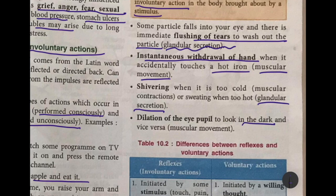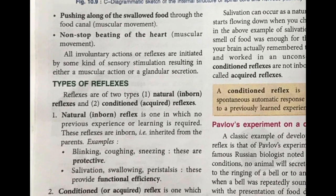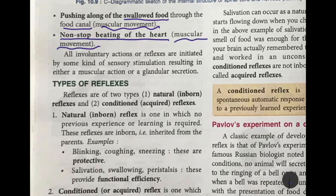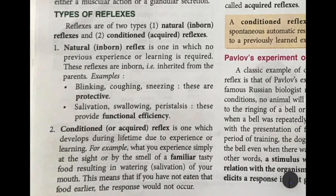Dilation of the eye pupil when it is dark allows more light to enter the eye, and when there is more light the pupil constricts so less light enters. Pushing along of swallowed food through the food canal by muscular movement is also not under your control, as is the non-stop beating of the heart. All these are involuntary actions or reflexes, initiated by sensory stimulation and resulting in either muscular action or glandular secretion.